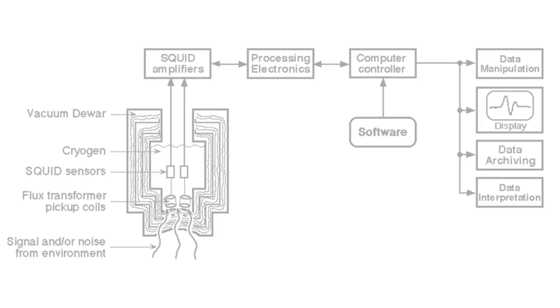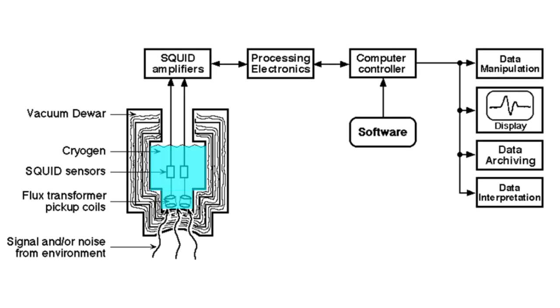Now, let's take a look at the MEG system from a wider point of view. The largest bulk of the system consists of a large dewar containing the liquid helium for cooling down the flux transformers and the squids. From the squids on, the measured signal is amplified and then digitized and passed on to computers for display, storage and analysis.